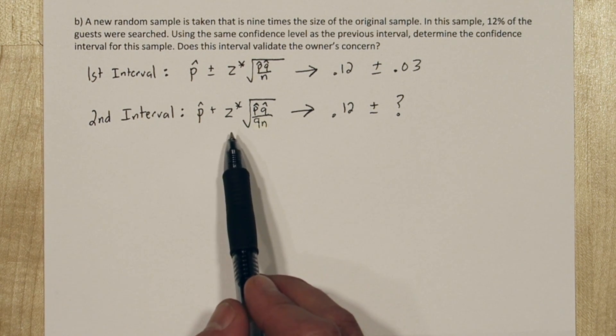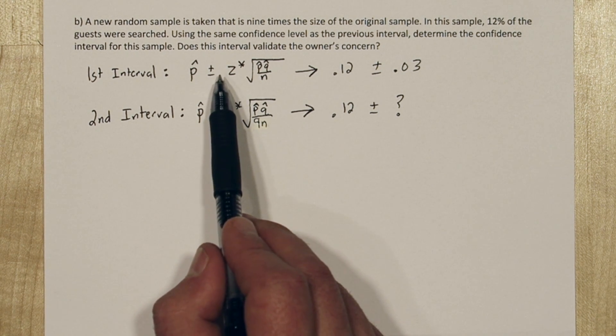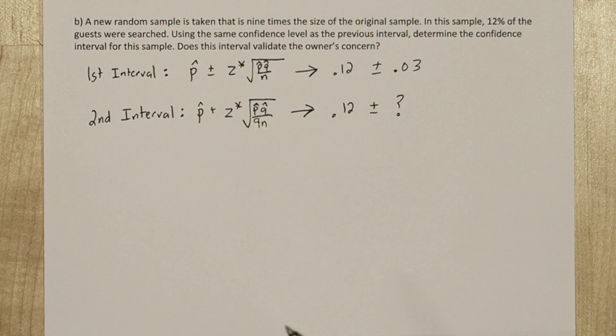Well, if you pull the 9 out of the square root, it's equivalent to multiplying the original margin of error by 1 third. In other words, we could write it like this.